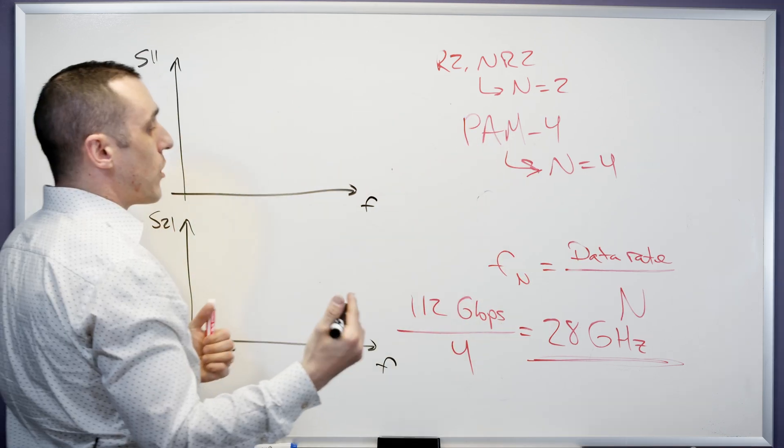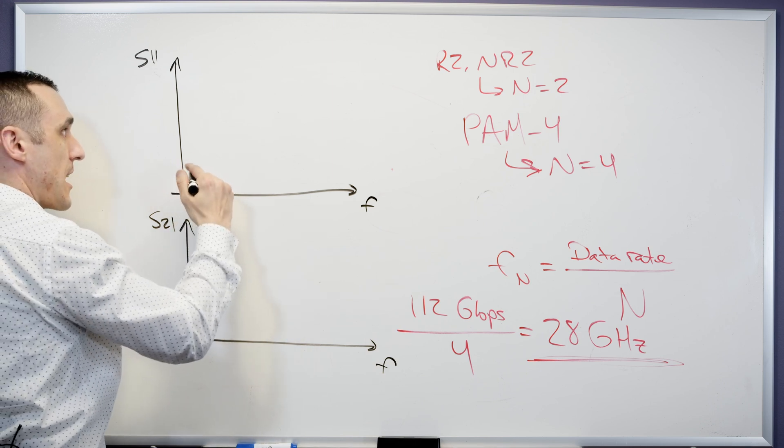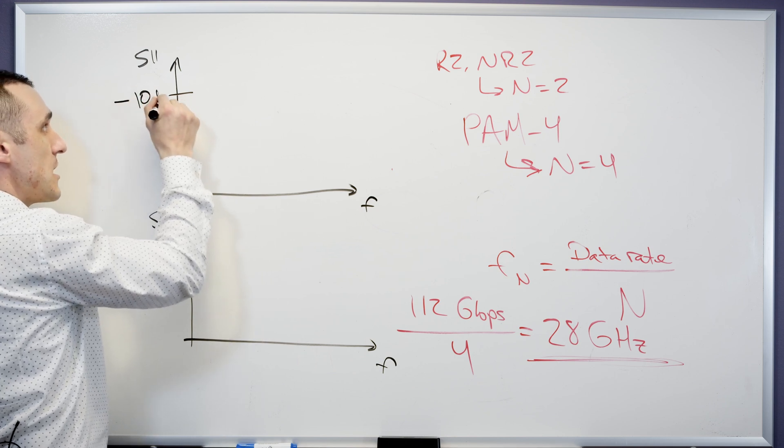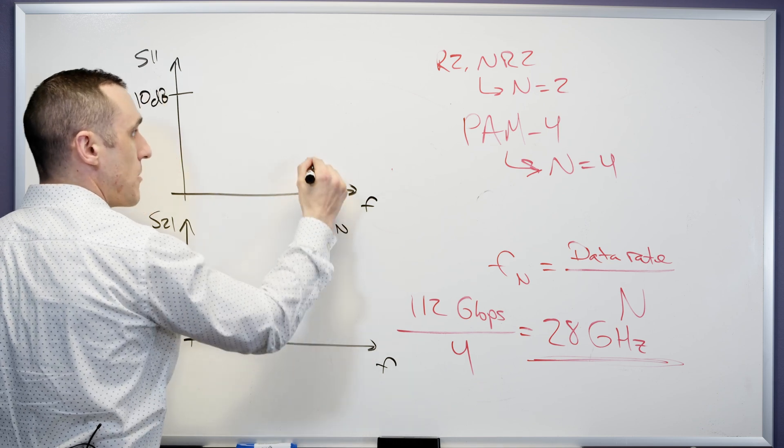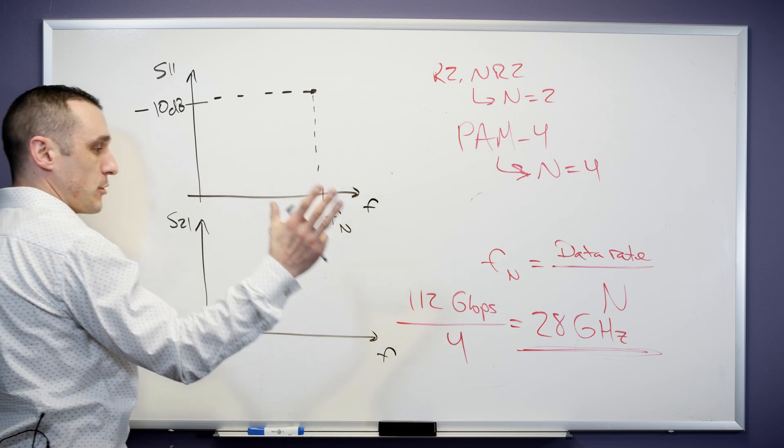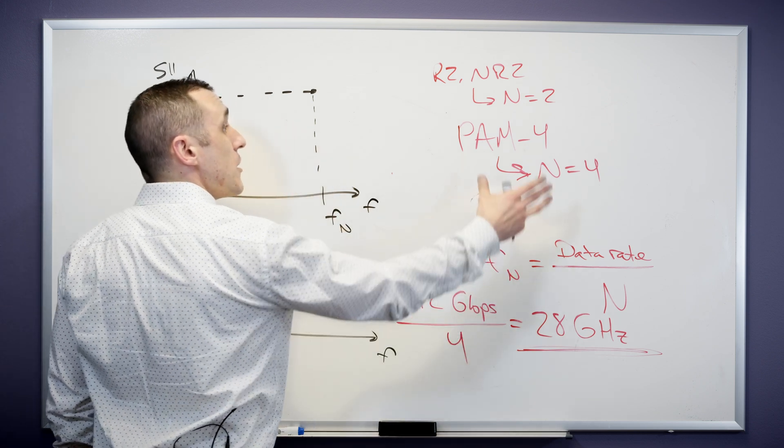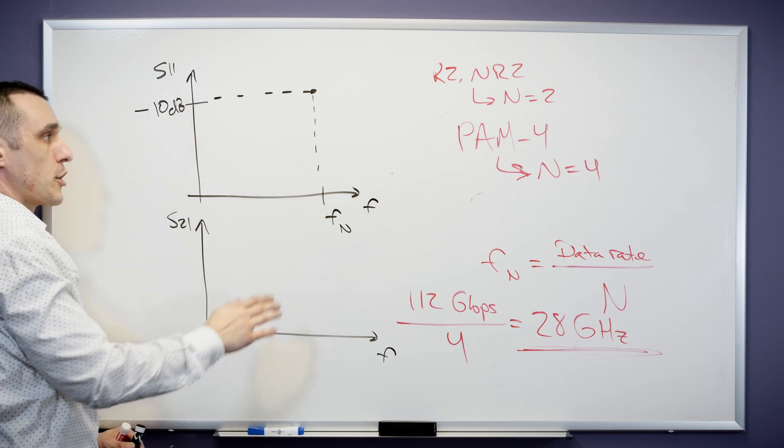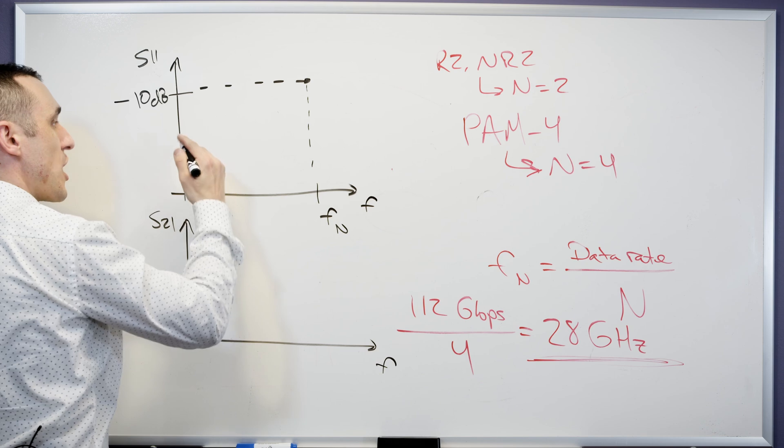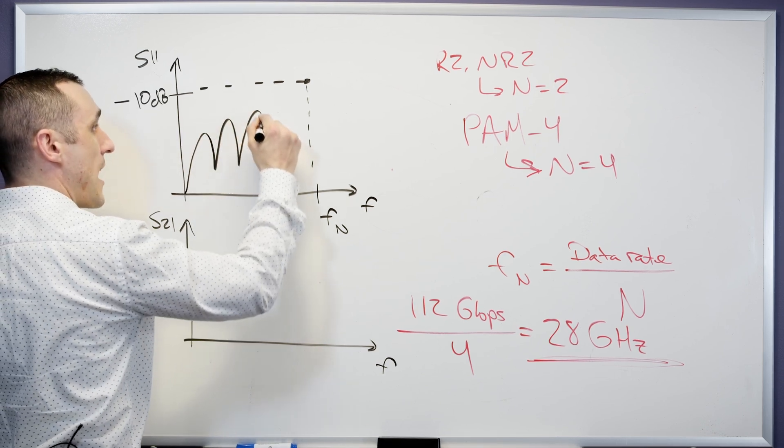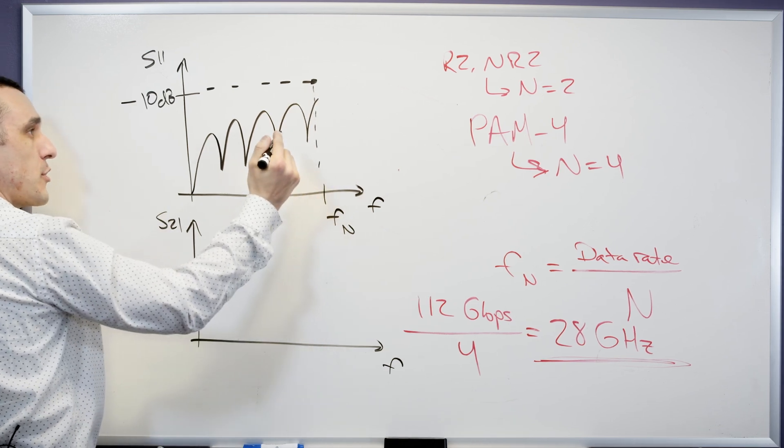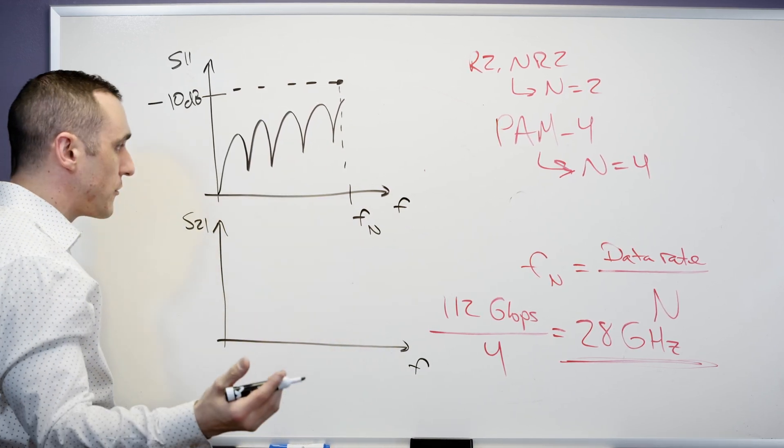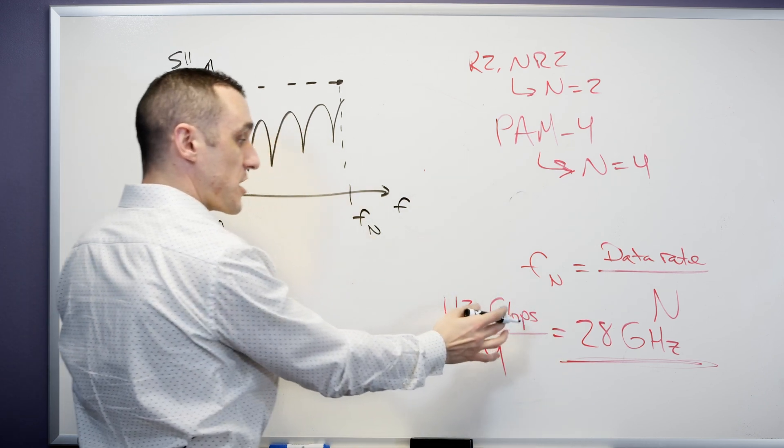In order for a channel to be able to transmit at this 112 gigabit per second with PAM4 signaling, what I need to make sure is that however the channel is designed, it is able to have very low S11, so below negative 10 dB, up to at least the Nyquist frequency F sub N. The curve needs to sit somewhere in this region. Generally, these curves will look something like this. They generally will have this kind of structure and then will increase over frequency. As long as I'm below that negative 10 dB limit, then there is a very good chance that this channel will qualify and comply with whatever interface I am using to transmit this bitrate.